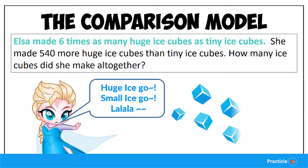So after reading the question, how do we know that we are supposed to draw the comparison model and not the part-whole model? Well, we will always draw the comparison model when we have two different objects and the question gives us information that helps us compare the two amounts.